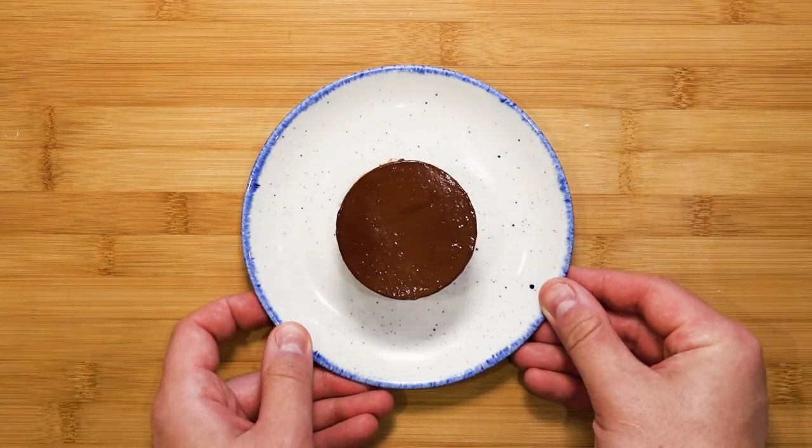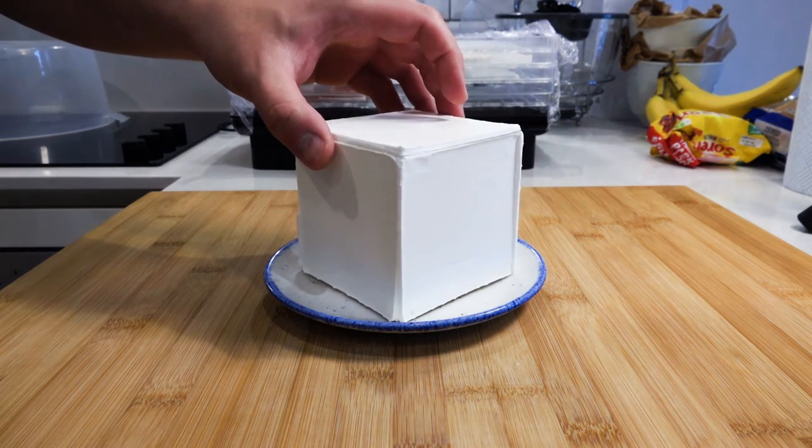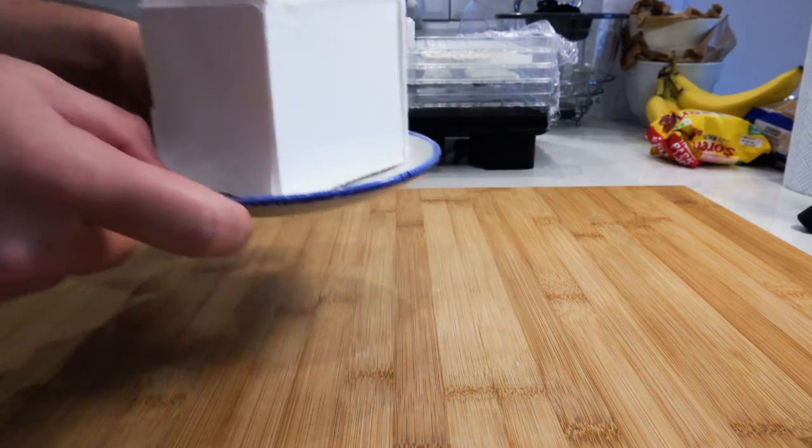So why make meringue cubes? Well, use it as a parcel to reveal a surprise. Hide a small cake, a small mousse, or even an engagement ring.